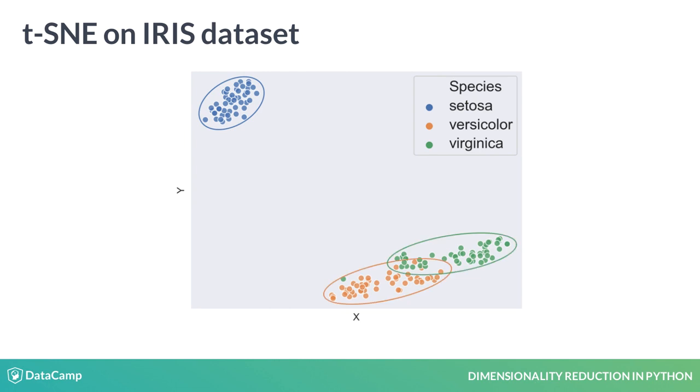However, the IRIS dataset only has four dimensions to start with, so let's try this on a more challenging dataset.